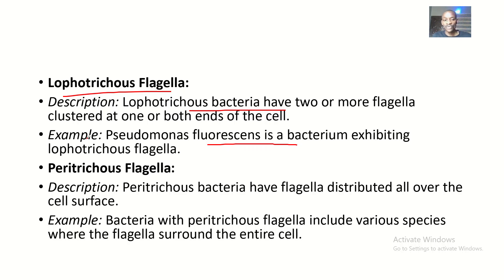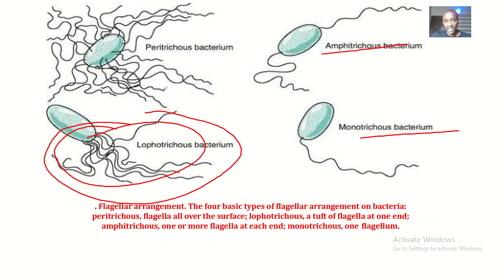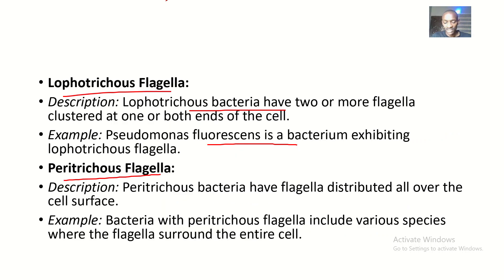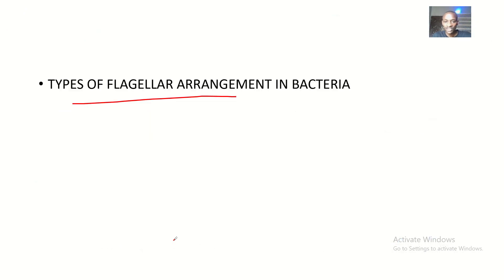For lophotritus, this cluster of flagella could be at one end or both ends — either of which is still considered lophotritus flagella. For peritritus flagella, flagella are distributed all over the cell surface. Examples include various bacterial species where flagella surround the entire cell.